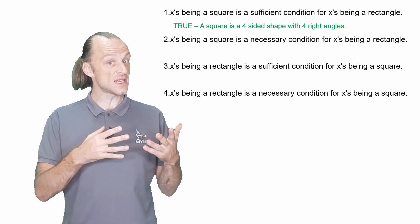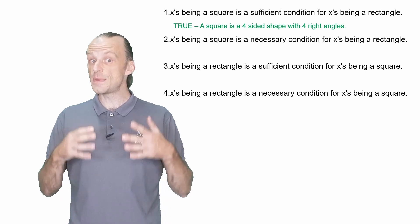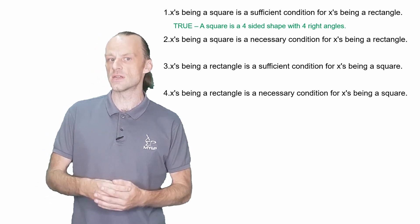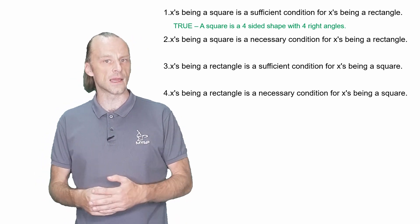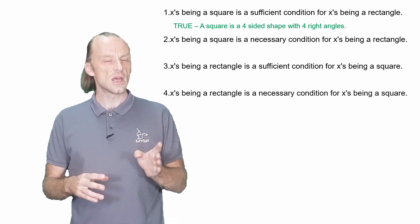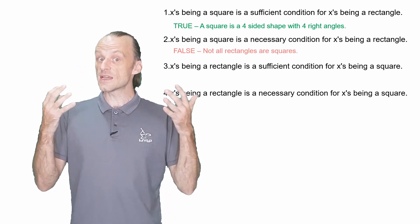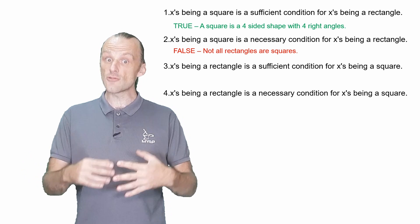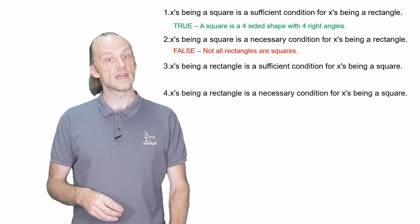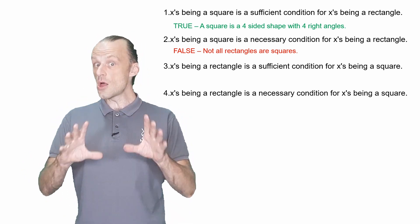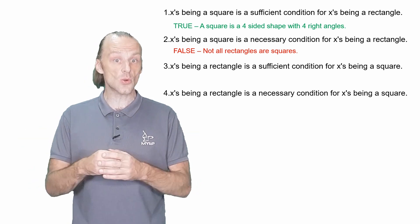Number two asks about the necessary condition. Does X being a square make a necessary condition for X being a rectangle? This one is false. We have to ask, does X being a square being false guarantee that X is a rectangle is false? And the answer is no. There's lots of rectangles that are not squares.